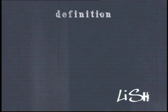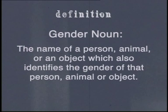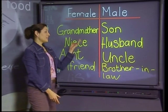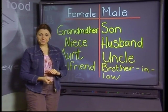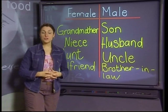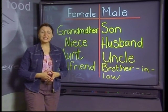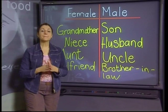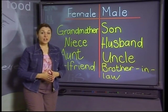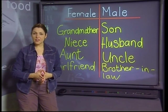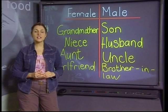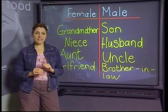Let's look at the definition. A gender noun is the name of a person, animal or an object which also identifies the gender of that person, animal or object. Here is a range of gender nouns that I have already divided into male and female. Grandmother would never refer to a male — the 'mother' part of the noun indicates that the person being referred to must be female. The word son cannot apply to a girl. Son is a gender noun as it demonstrates the gender of the person involved.